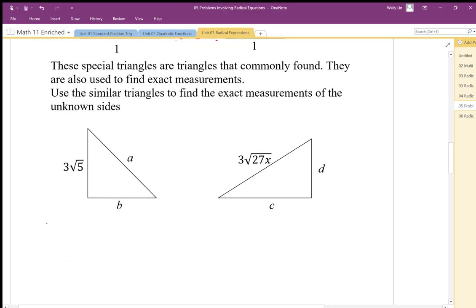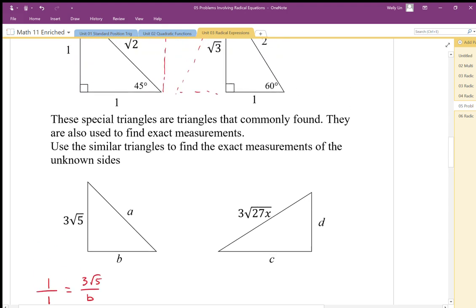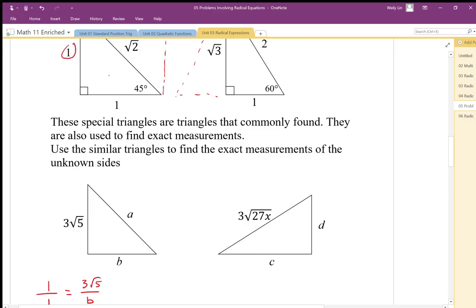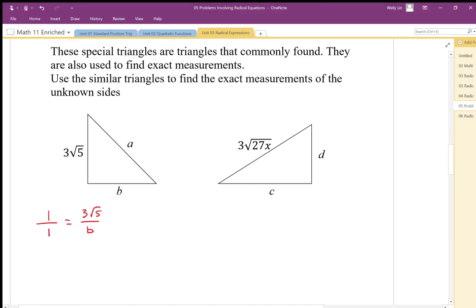I know that the ratio of 1 to 1 is equivalent to 3 root 5 to side B. So 1 to 1 is equal to 3 root 5 to B, which means that B is equal to 3 root 5. We don't need to set up a ratio for that necessarily, but you can see that there's our multiplier.